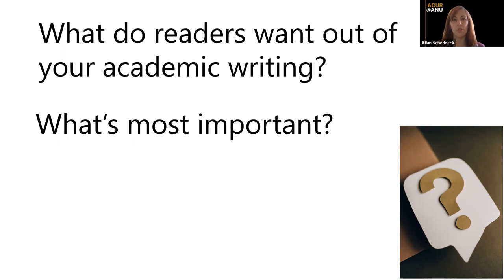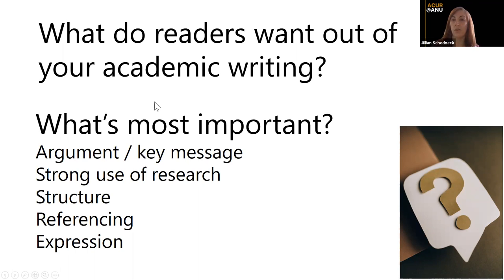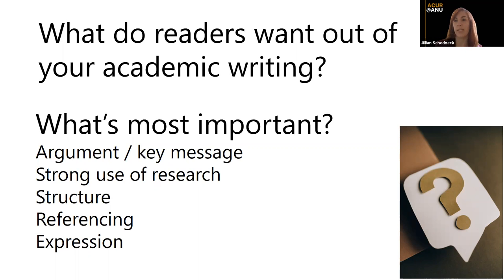I have a little list here that I'll unveil. Thinking about what's most important, this is often what you see in your rubric if you're writing for a course. Your argument and key message is first of all the most important thing — it carries the most weight in your mark. Whether you're submitting to an academic journal, writing a chapter for your honours or master's thesis, your argument and key message is the most important thing. This is mostly universal across all the different situations you might be in.